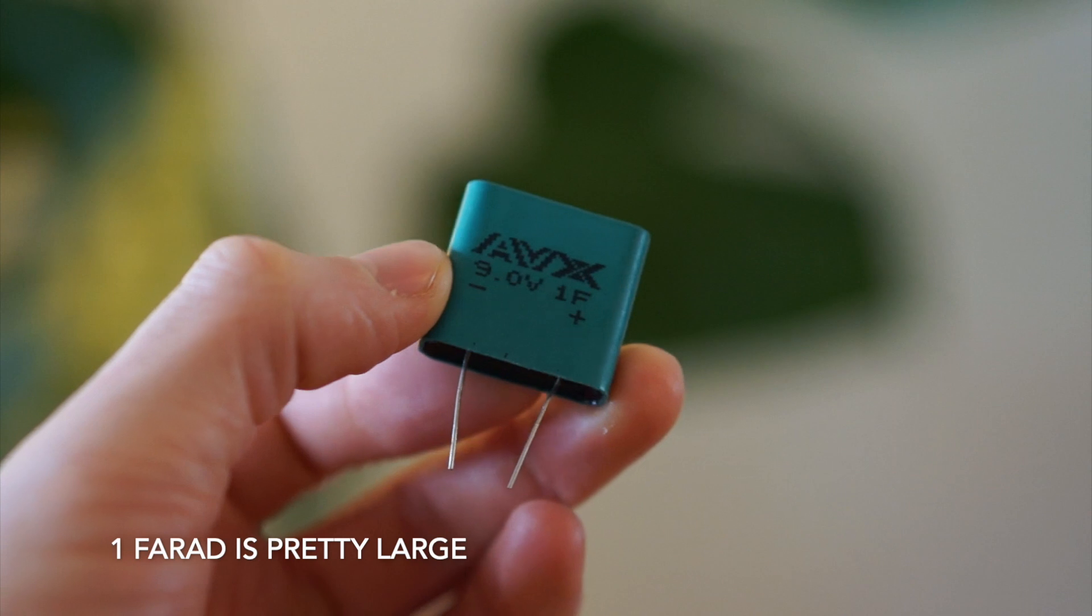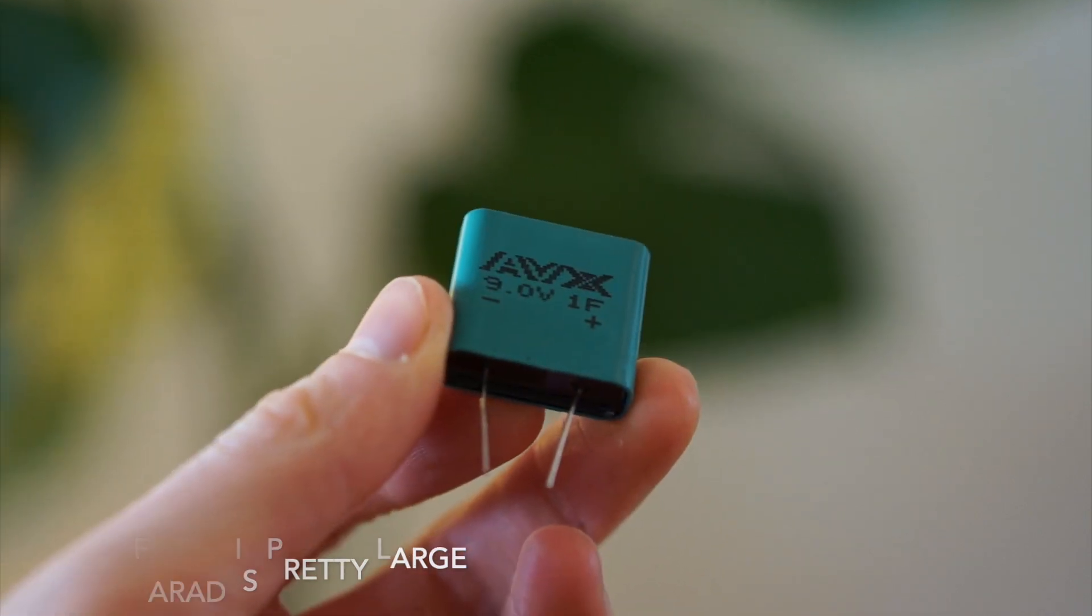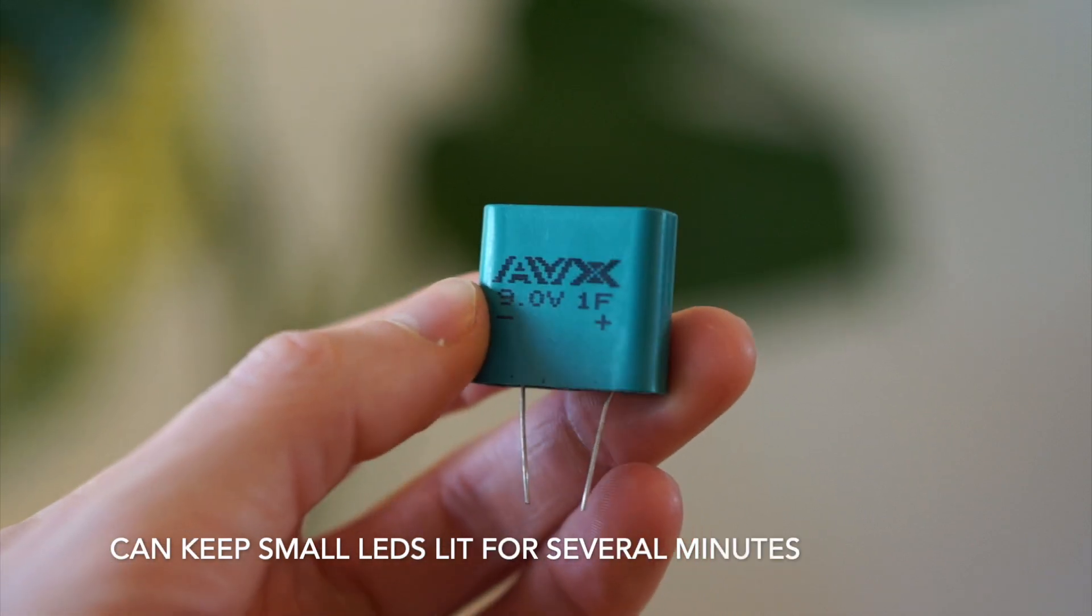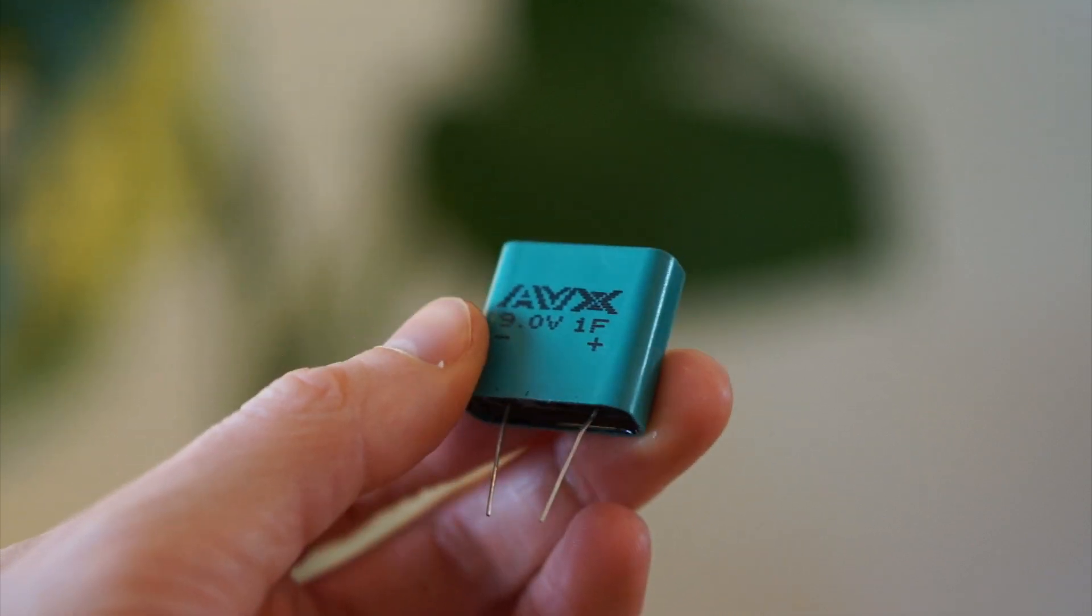By the way a 1 farad capacitor is actually pretty large. At around 3 volts a 1 farad capacitor can keep an LED brightly lit for a few minutes and dimly lit for quite a while longer.